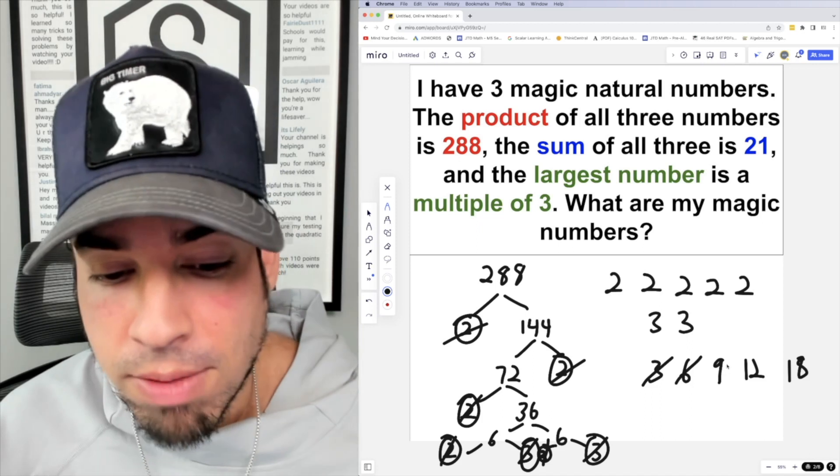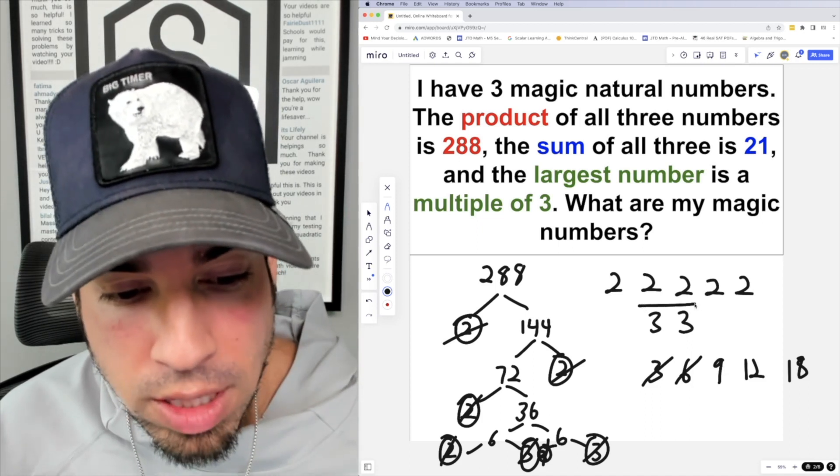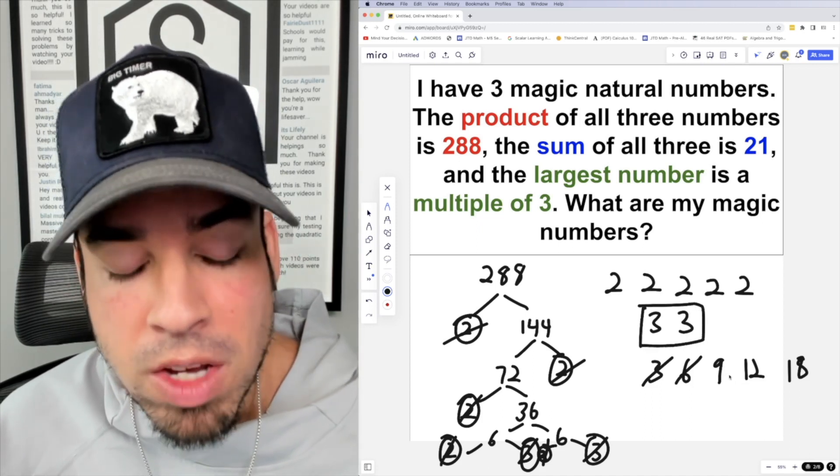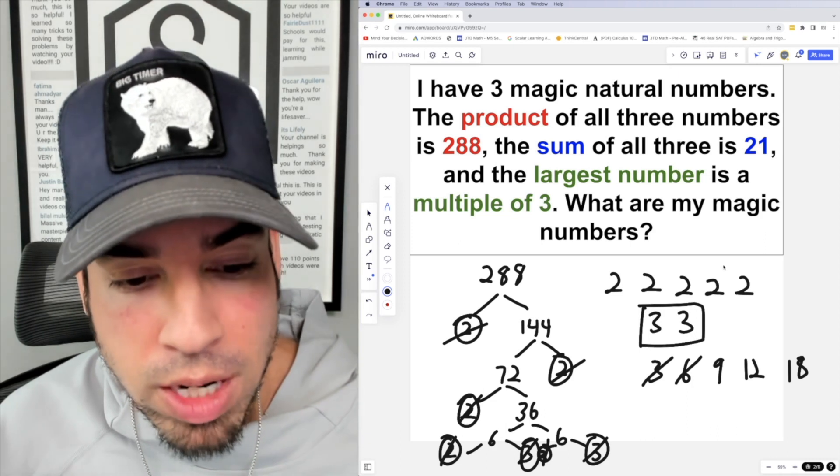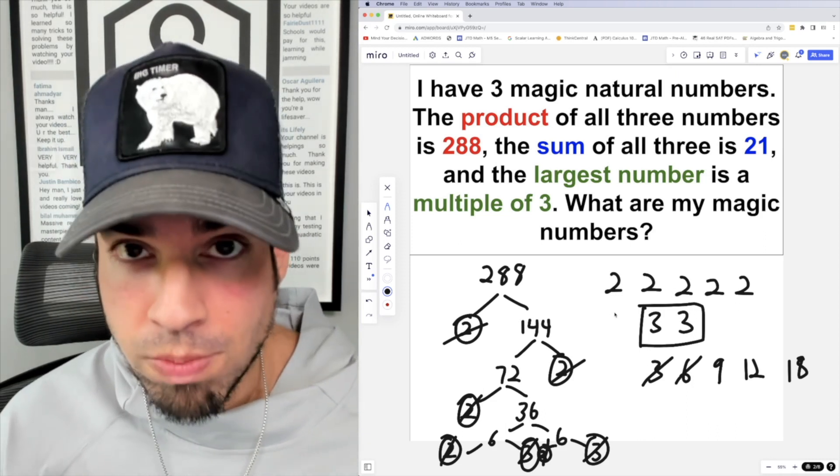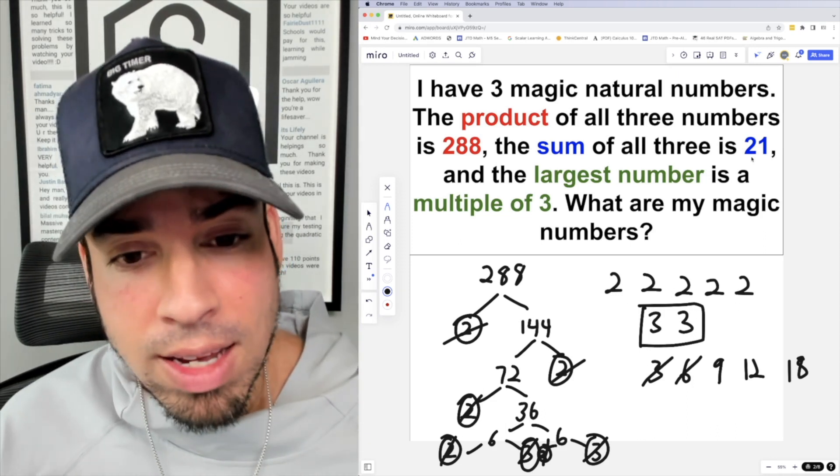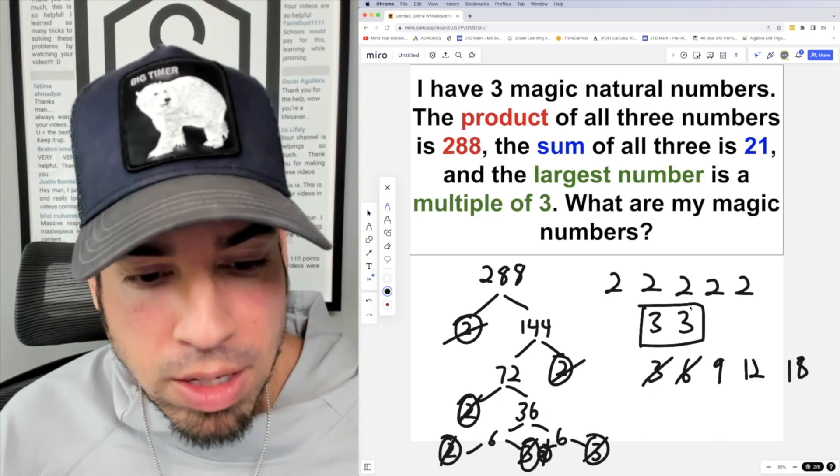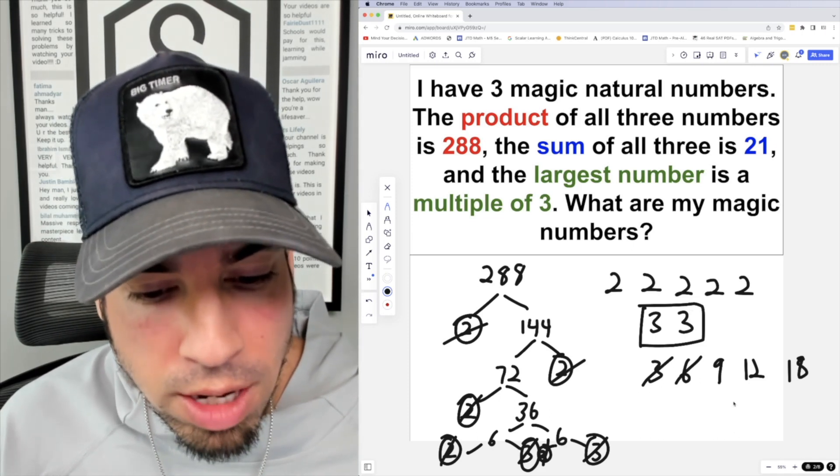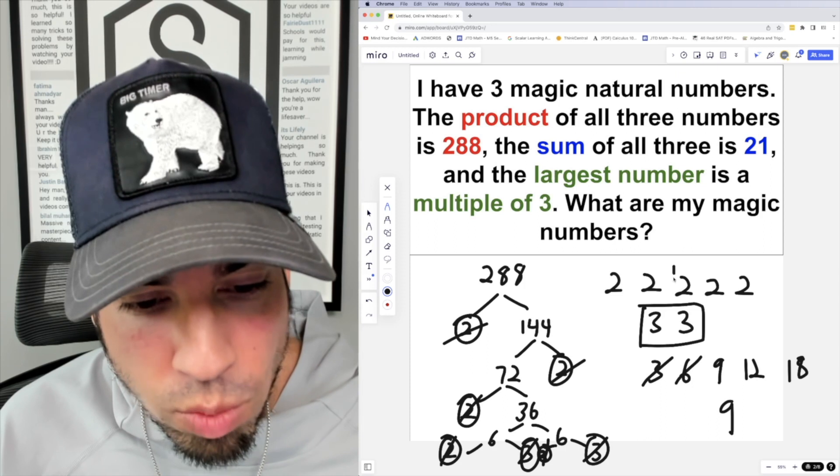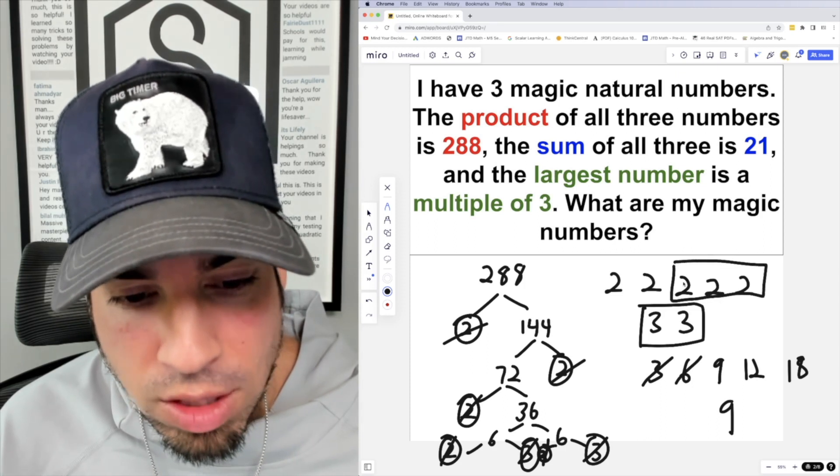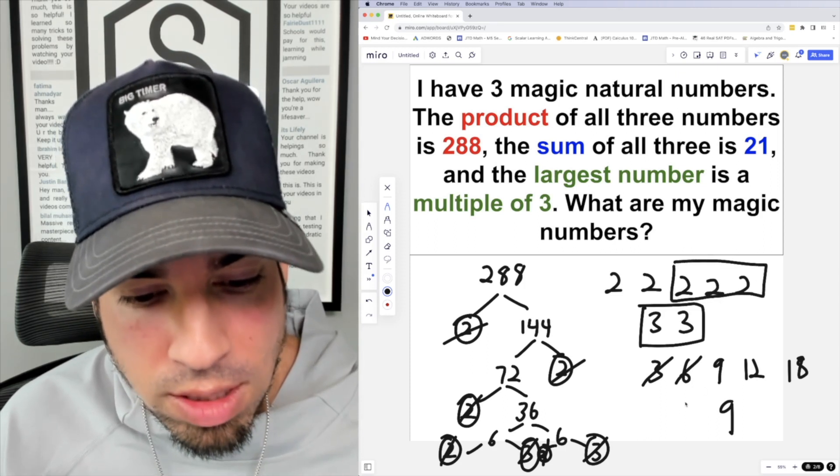So then the question is, can we arrange these other numbers in terms of products so we can get numbers that again are going to add up to 21 and multiply to 288? Well, check this out. If I have my greatest number being 9, what if I group three of these together? What's 2 times 2 times 2? That's an 8. What if I group two of these together? What's 2 times 2? That's 4.